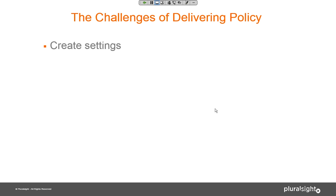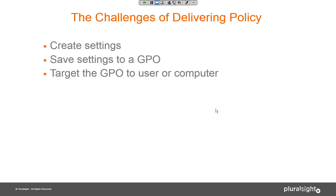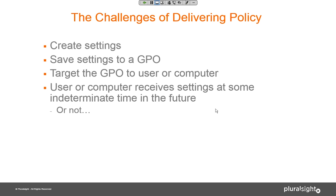The typical workflow: you create settings in group policy, save them to a GPO, commit them. If it's a new GPO, you need to target it to a user or computer. Remember, it's users and computers that process group policy. Sometimes people get confused because the word 'group' is in 'group policy,' but groups are not the targets. The things in Active Directory that get policy are user objects and computer objects. That's a key piece to keep in mind, especially for folks just starting out with group policy.